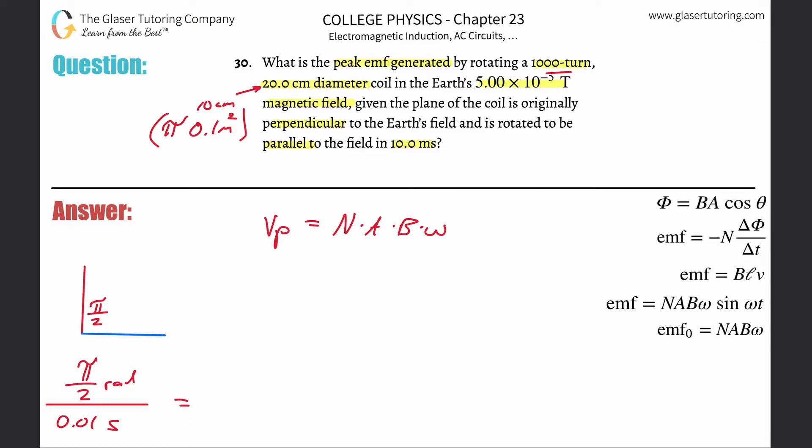So take pi, divide it by two, and then divide it by 0.01. So you get about 157 or so. 157 radians per second. Boom! Goes the dynamite.